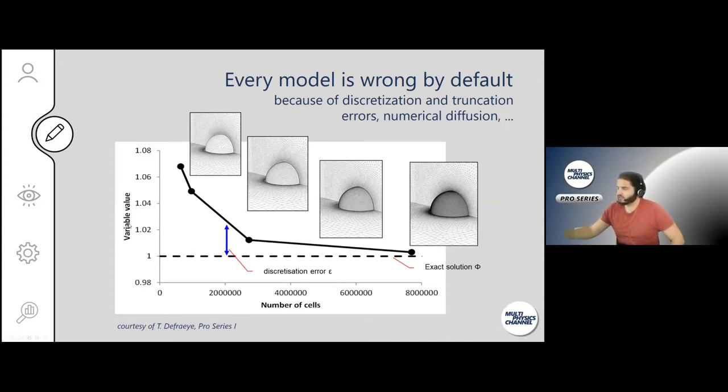So here you see basically one observed variable value that can be a temperature, velocity, or pressure, in function of the number of cells. When you increase the number of cells, you get always a bit closer to the exact solution, but you never get close to the exact solution, because that would mean you have infinitely small mesh elements, and that's just infinity. But we can still calculate that exact solution with the Richardson extrapolation. I will show you in a minute.